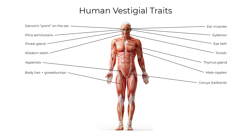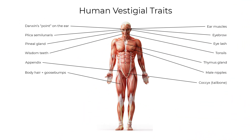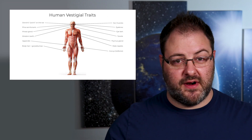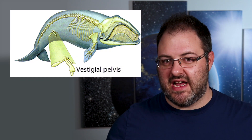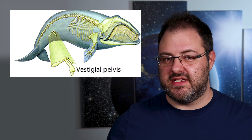Another way we can tell that evolution is real is by looking at characteristics that serve no purpose at all in different organisms — those are called vestigial traits. We as humans have quite a few vestigial remnants, including our appendix, goosebumps, wisdom teeth, tail bones, and pheromone receptors in our nose. Other animals have vestigial traits as well, like whales having hip bones and snakes with leg bones.